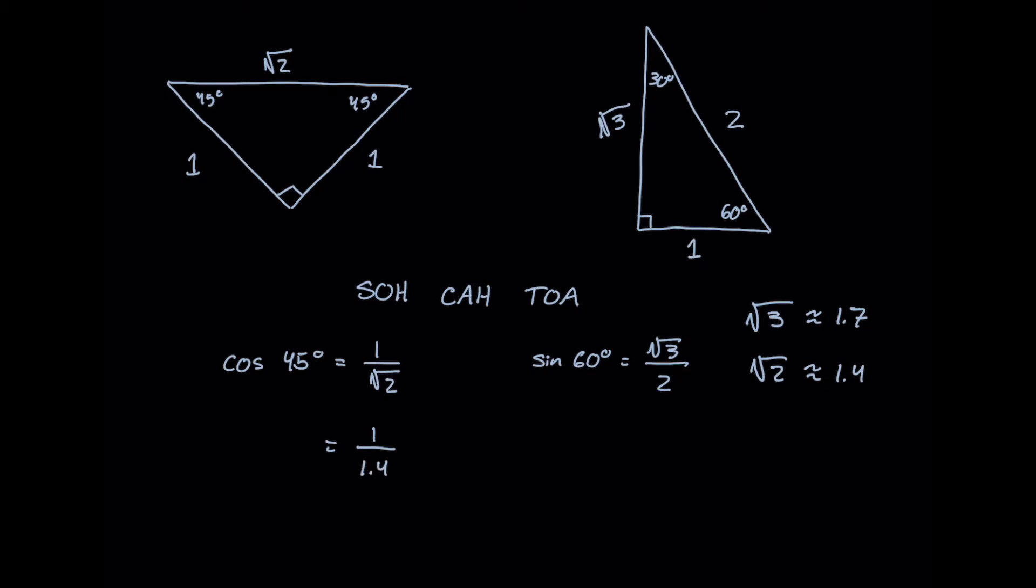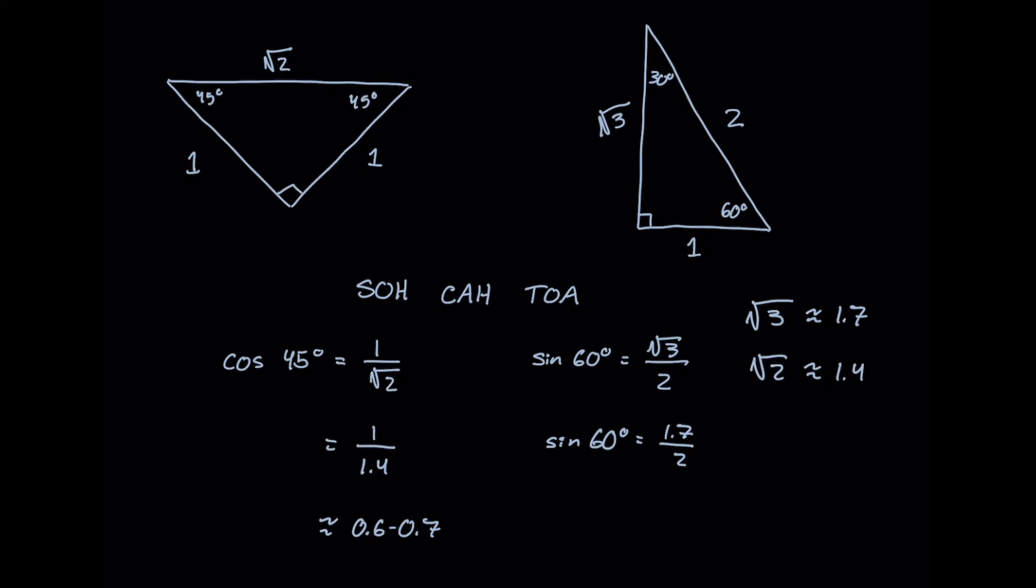Where we have 1 over 1.4 and for sine 60 degrees here we'll have 1.7 over 2. Now for the MCAT we don't need exact values but we can approximate these as about 0.6 to 0.7, it actually comes out to be about more closer to 0.7 for cosine of 45 degrees. And then for sine of 60 this works out to be about 0.85, a little bit higher than that but that approximation definitely works for us.